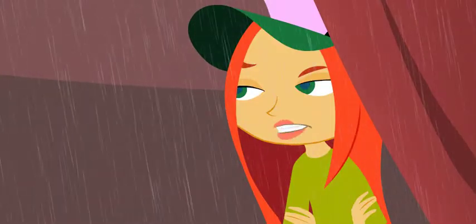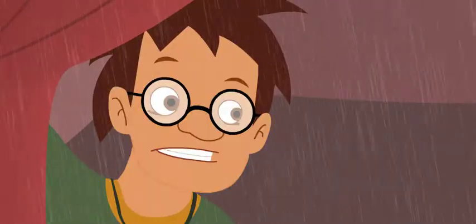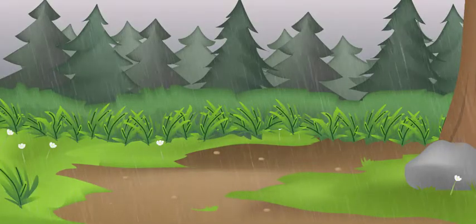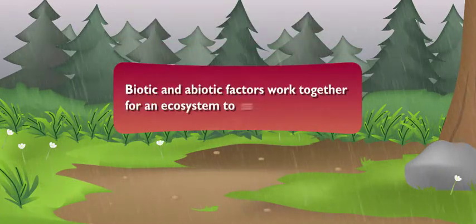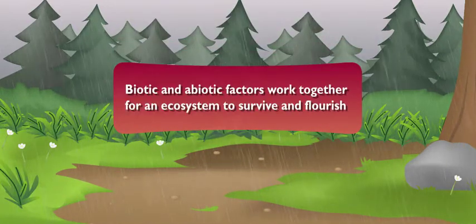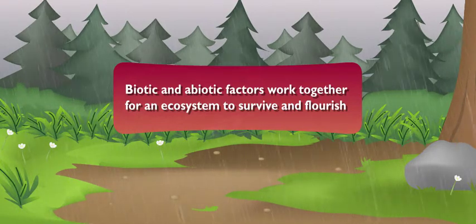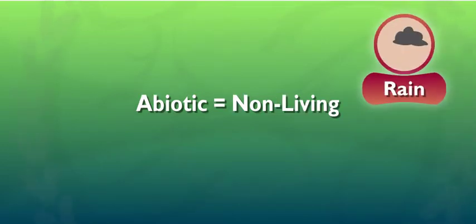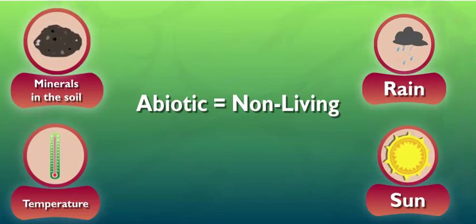It's also a huge factor in ruining my camping trip. You tell me why it's so important. Well, an ecosystem like this forest is quite the masterpiece. Things called biotic and abiotic factors work together to make sure an ecosystem survives and flourishes. Rain is an abiotic factor. Abiotic means non-living. Rain, sunlight, temperature, minerals in the soil — they're all abiotic factors that help the ecosystem thrive.